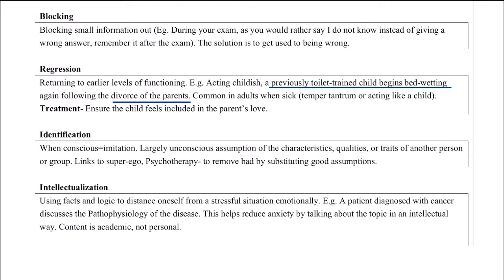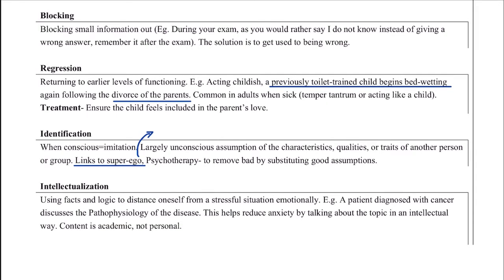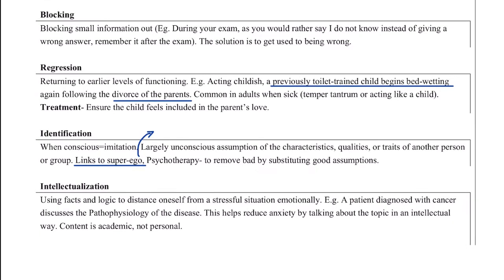Identification is the unconscious assumption of characteristics or traits of another person. This is unconscious — unlike imitation, which is conscious. You observe the person and unconsciously copy them. This is related to superego. It is very common in adolescents obsessed with a celebrity who copy the way they dress. If it is conscious it is imitation; if it is unconscious it is identification.